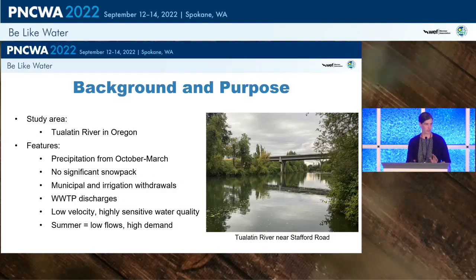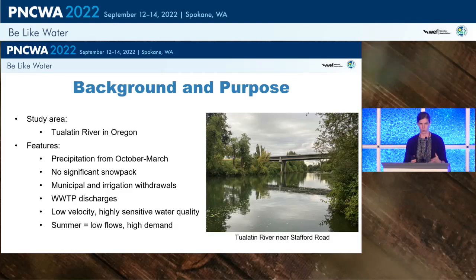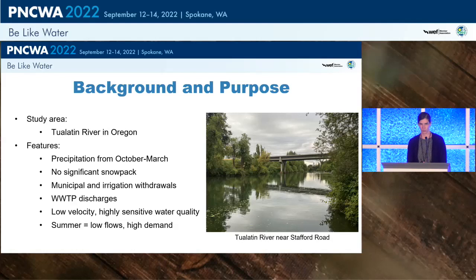For this particular project, our study area is the Tualatin River in Oregon. It originates in the coast range to the west of Portland and ultimately drains to the Willamette River that runs through Portland. Some interesting features of this system: there's precipitation mainly from October through March with no significant snowpack, both municipal and irrigation withdrawals, and four wastewater treatment plant discharges from plants operated by Clean Water Services. One interesting feature is the very low velocity of this river, particularly at the downstream end — it's very lake-like and highly sensitive to water quality changes.